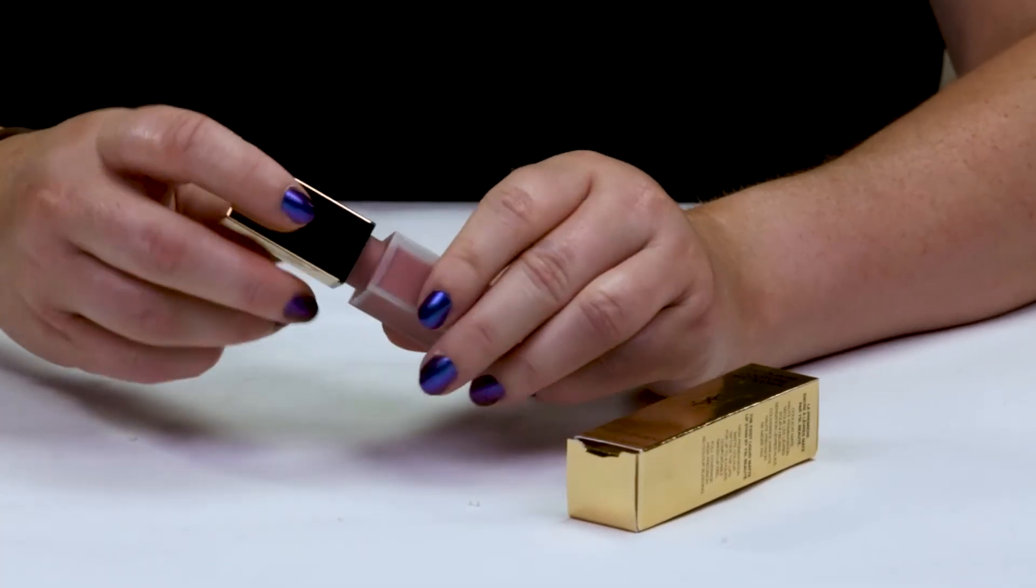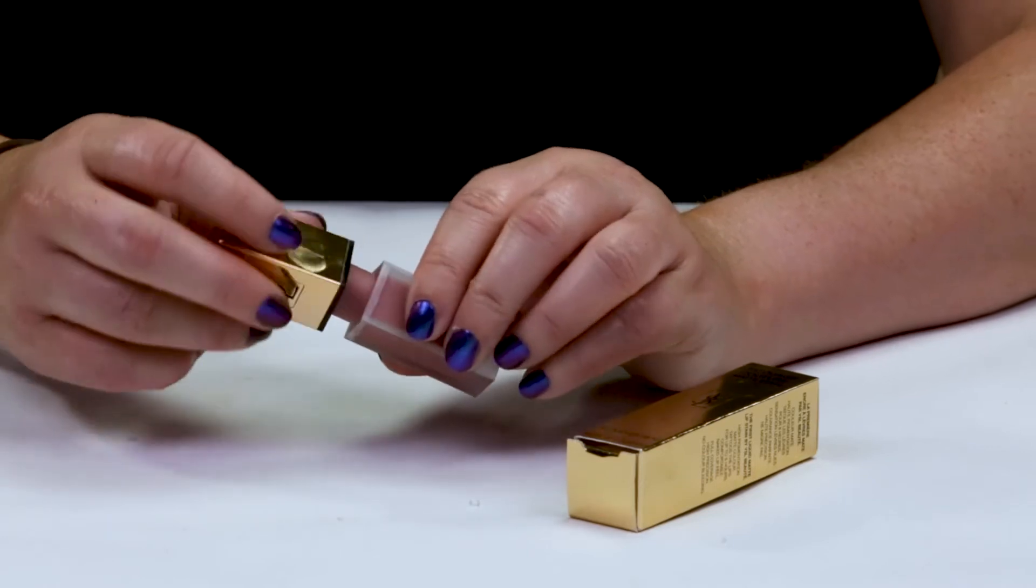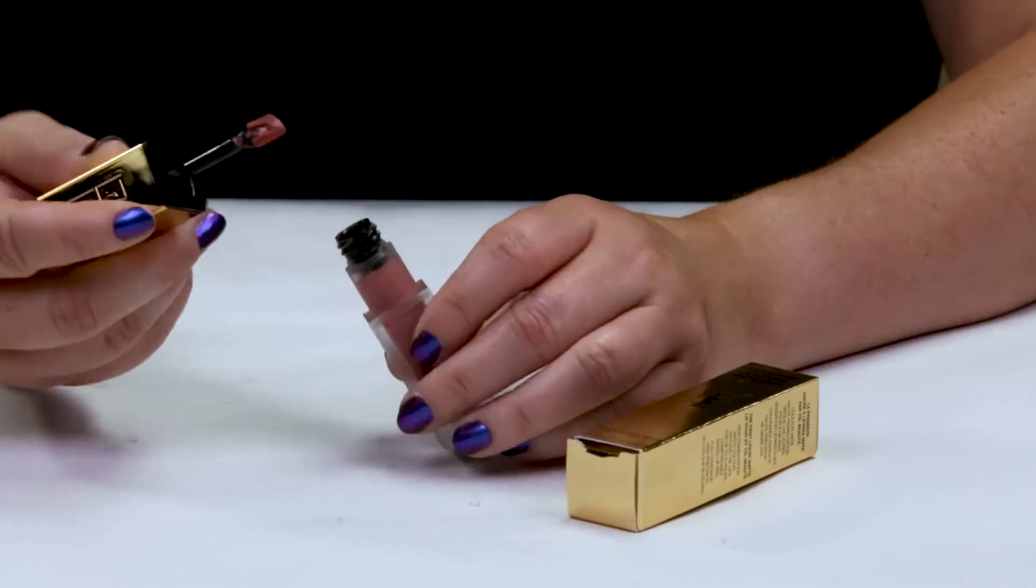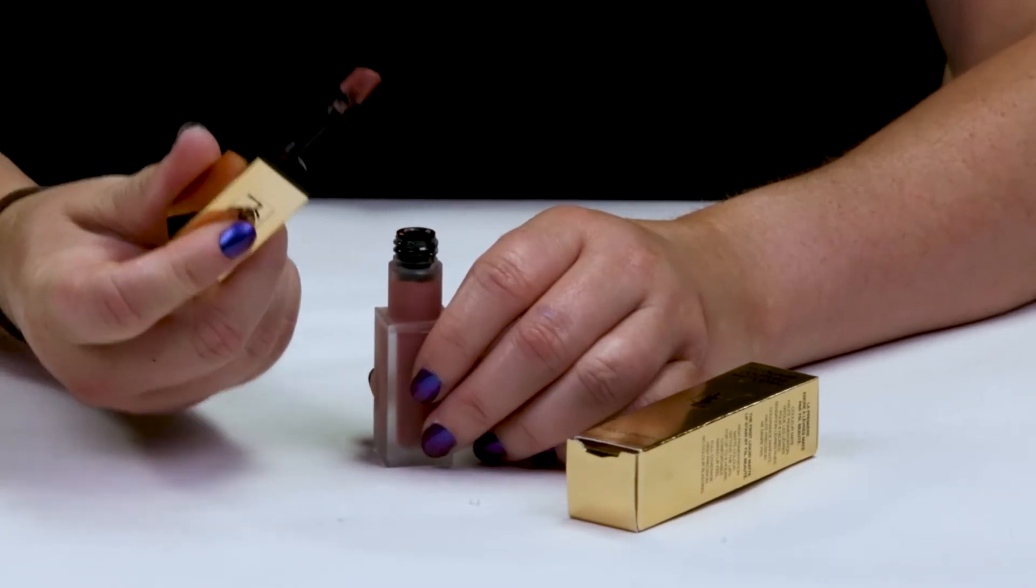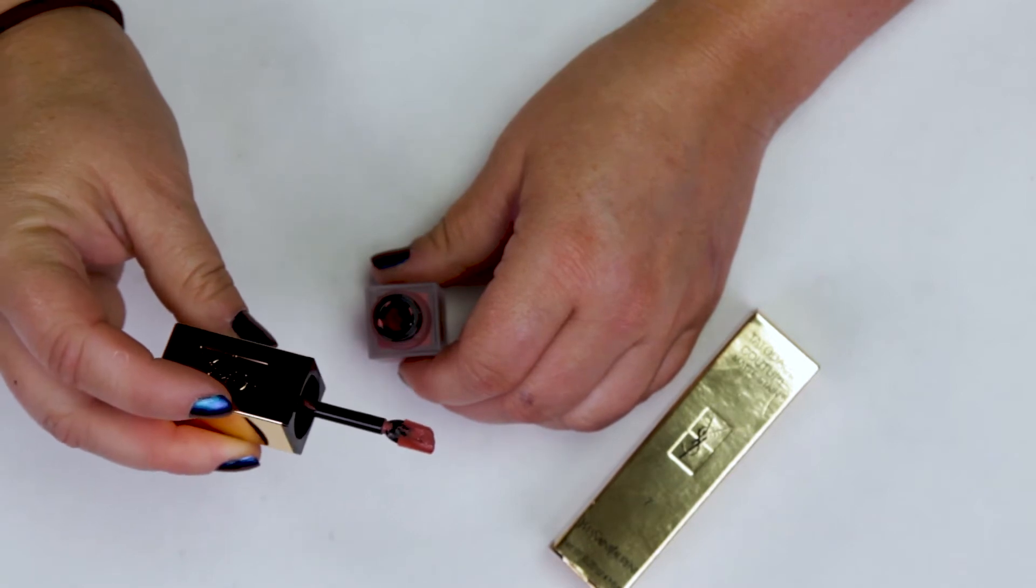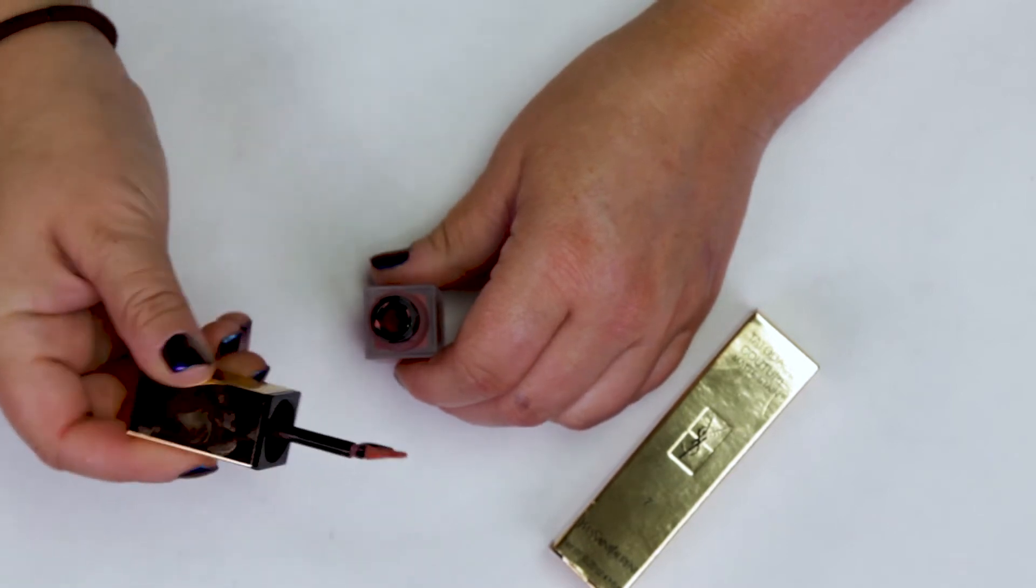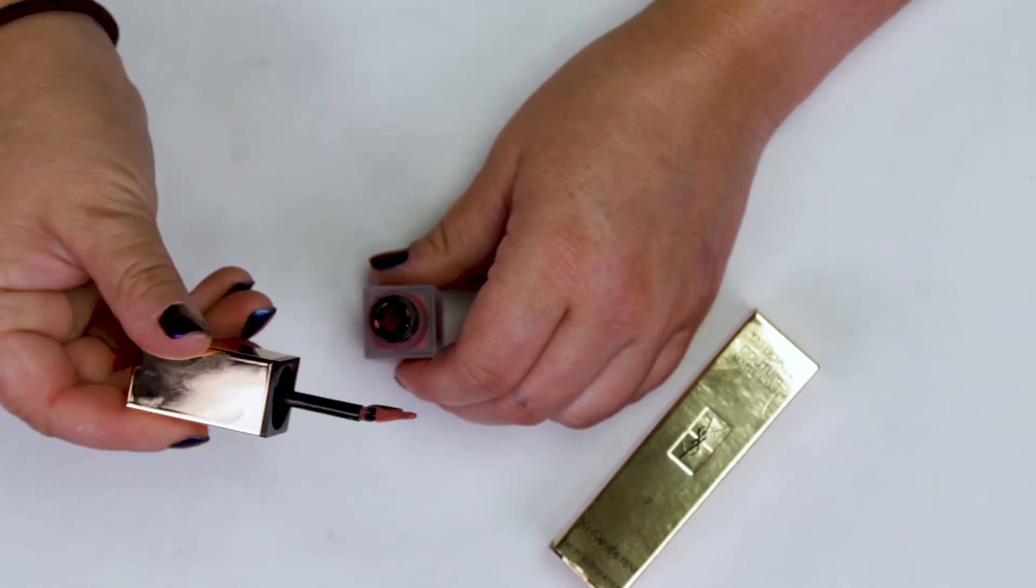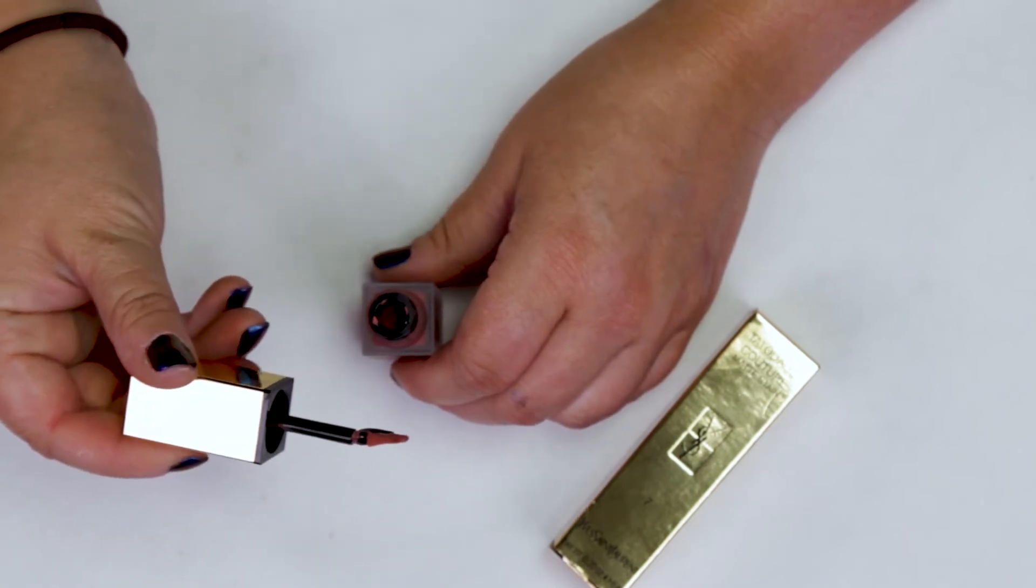The nice thing with this product, I haven't seen this much before, is that the applicator is in the shape of kind of a square, almost. And it makes it very easy to apply it to the outline of your lips, actually. I'm surprised no one else has thought of this before. I haven't seen another applicator like this, but perhaps they're out there.